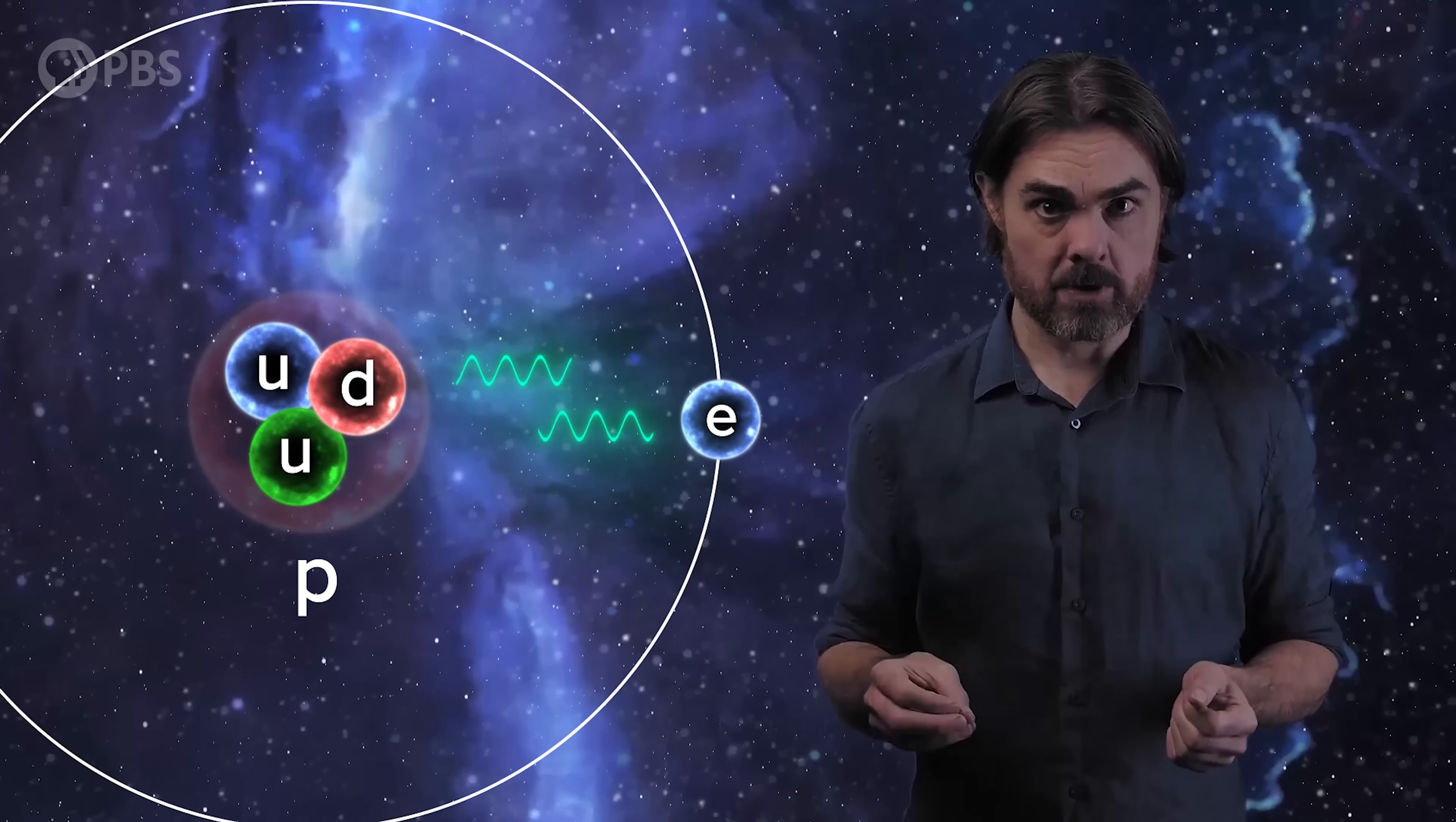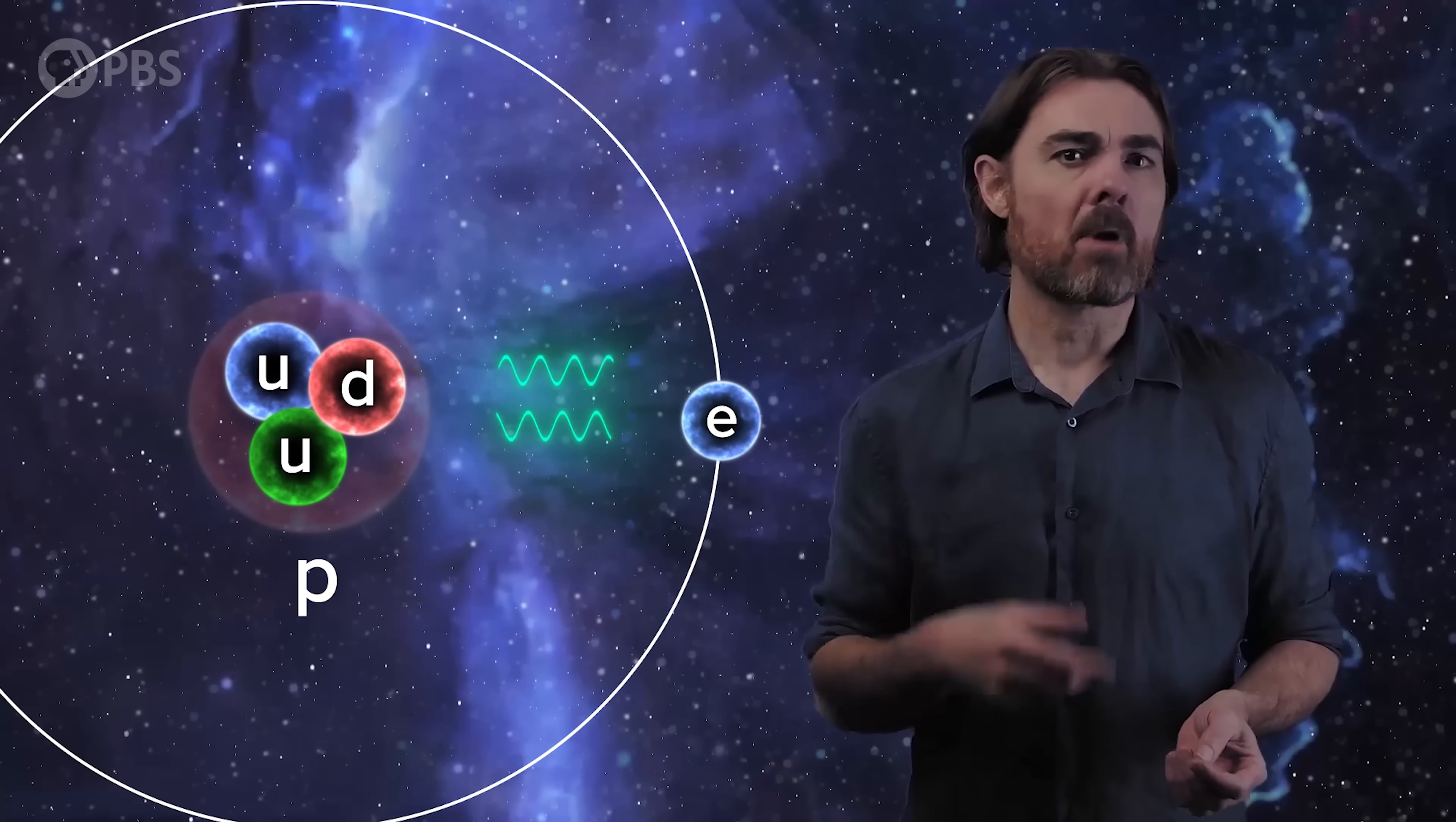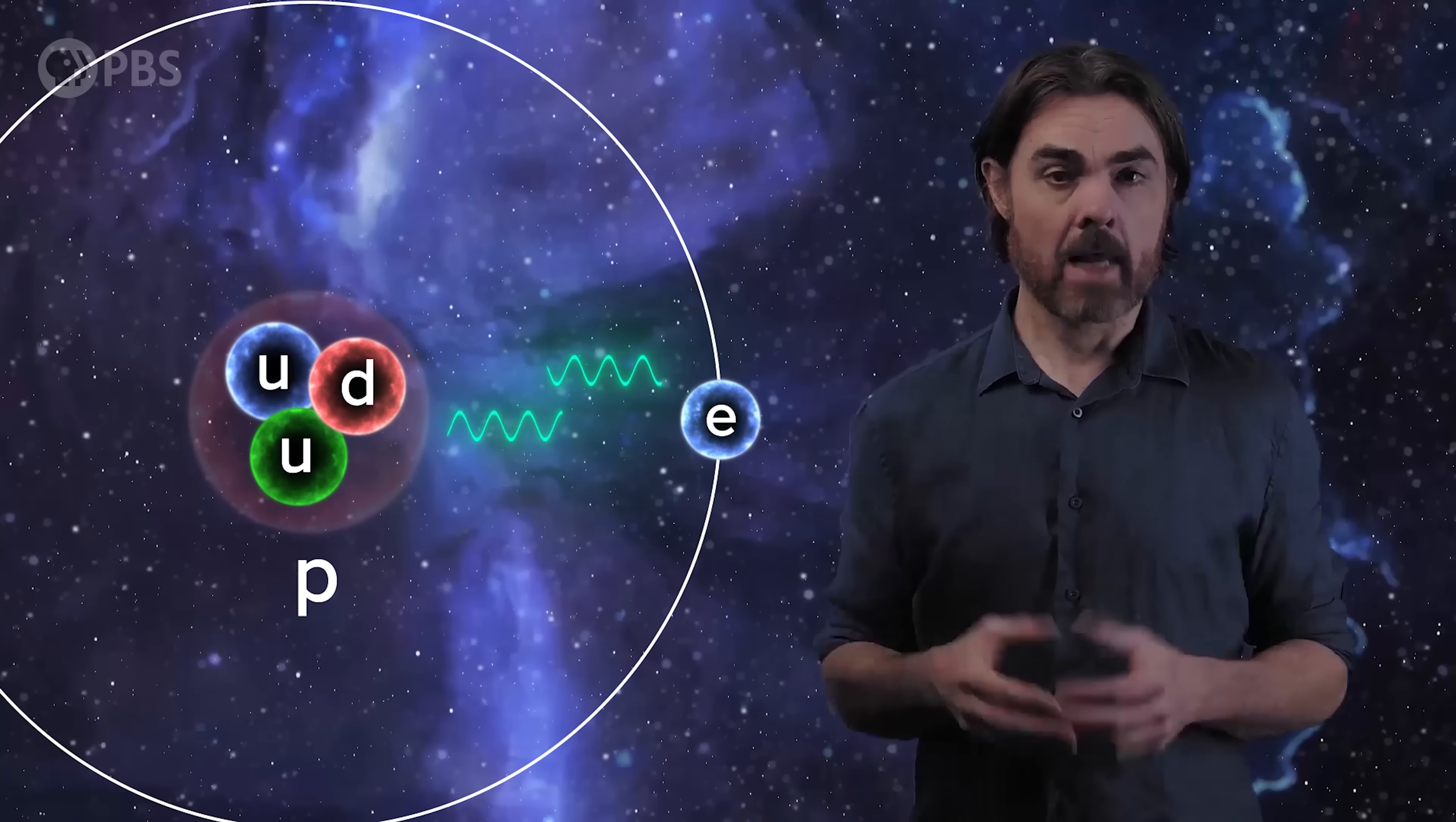Now, elementary particles can be combined into composite particles. For example, an atom is composed of quarks forming the nucleus, and electrons bound to that nucleus by the exchange of virtual photons. Believe it or not, we can create composite quasiparticles in a similar way. And, as it happens, the new quasiparticle that we're going to create can help us with this electrical resistance problem.